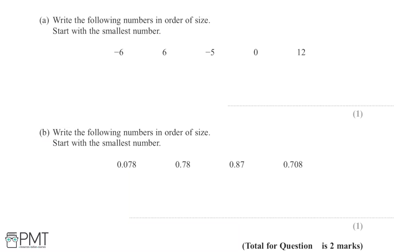Here I'm asked to write the following numbers in order of size, starting with the smallest number. As we can see, we've got some negative numbers, zero, and then some positive numbers also.